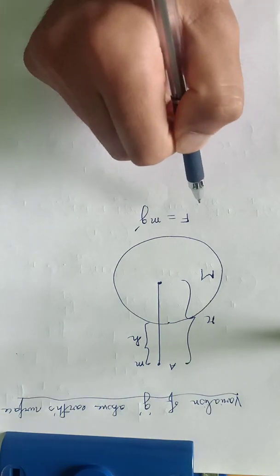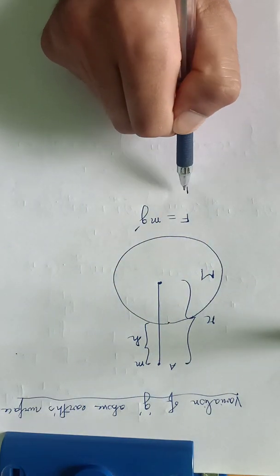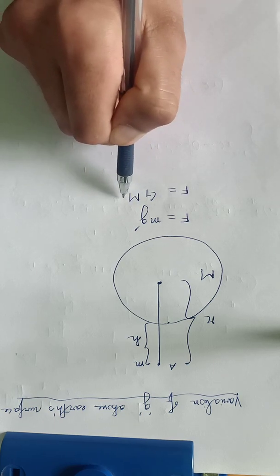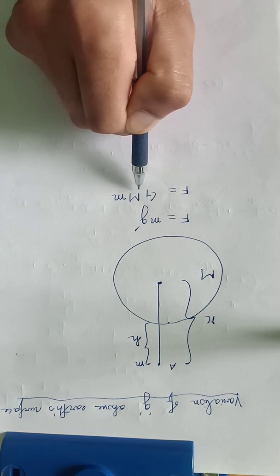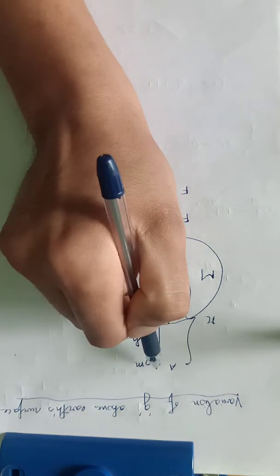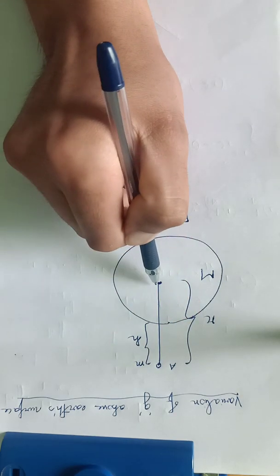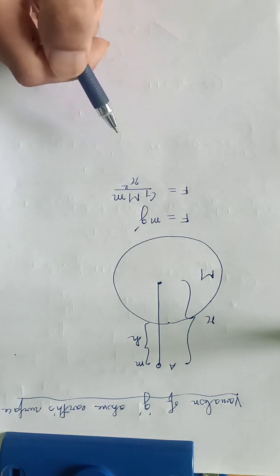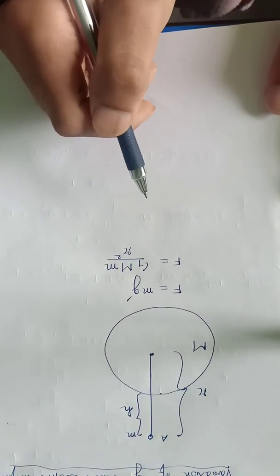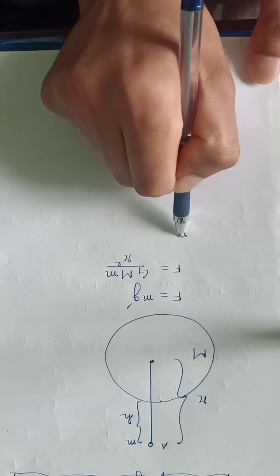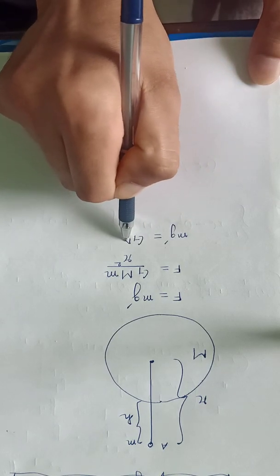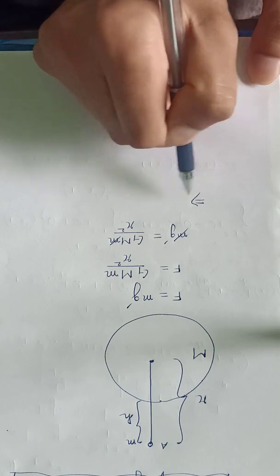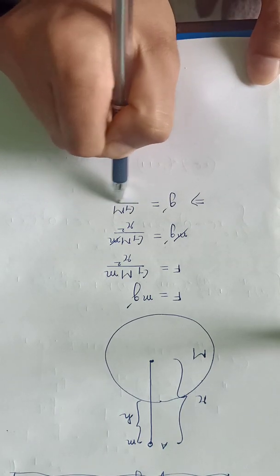Now Newton says that the force of attraction between these two bodies will be F equals G times the product of their masses — mass of the Earth into mass of the object — divided by the square of the distance between them. Here the distance between the object and the center of the Earth is small r, so it is small r squared. Comparing the two equations, mg' equals GMm divided by r squared, and small m gets eliminated, so g' equals GM by r squared.